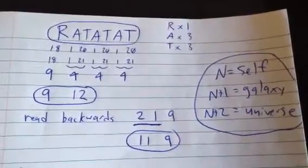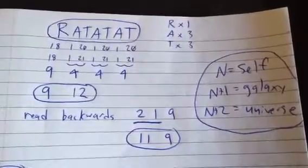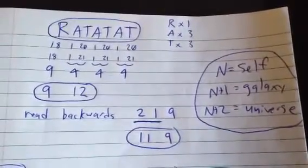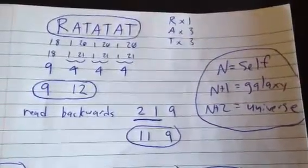And the T's look like nails that crucified Christ. So Ratatat, those are what they are in letters of the alphabet, because we know a 0 is a 1, it reduces to that. And because 1 and 2, 1 is equal to 4, we have 9, 4, 4, 4, or 9, 12. Read backwards, it's 2, 1, 9. 2 1s is a 9, 11, backwards.